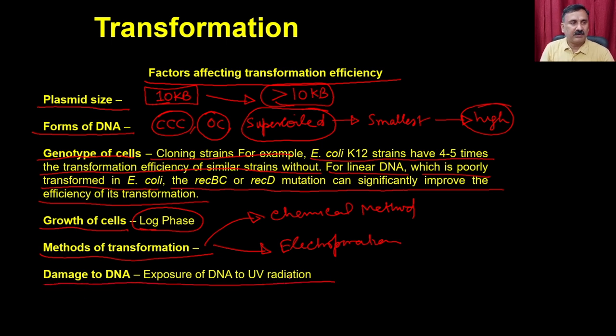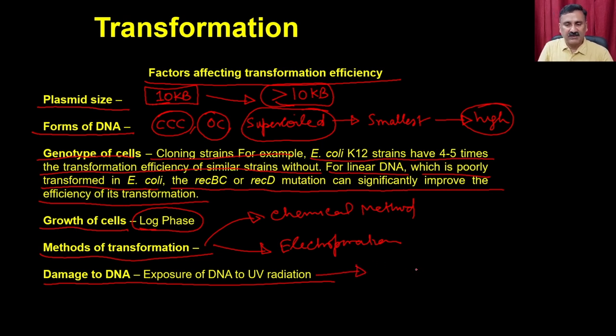Exposure of DNA to UV radiation is another factor that affects transformation efficiency. This covers all aspects of transformation of E. coli cells, and you should now have a better understanding of how to prepare competent cells and perform transformations.